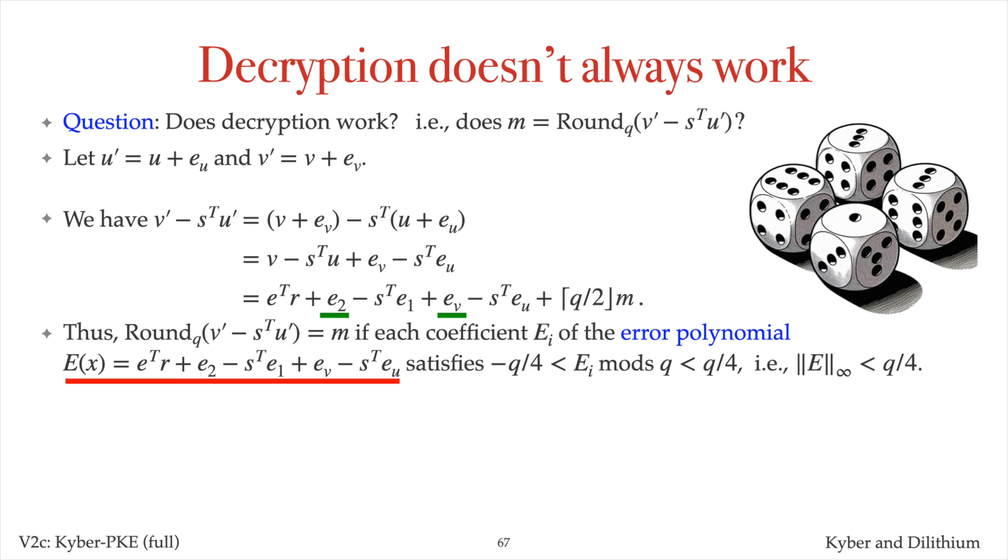More precisely, the rounding yields the message polynomial, provided that the error polynomial E has infinity norm less than Q over 4. For the ML-KEM-768 parameters, the absolute value of E_i could in fact be greater than Q over 4. Hence, decryption is not guaranteed to succeed.